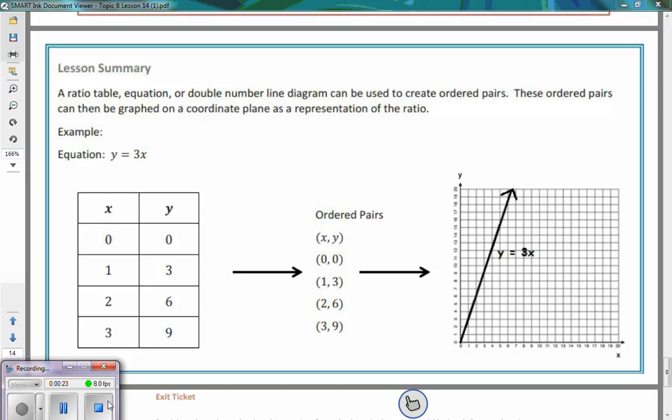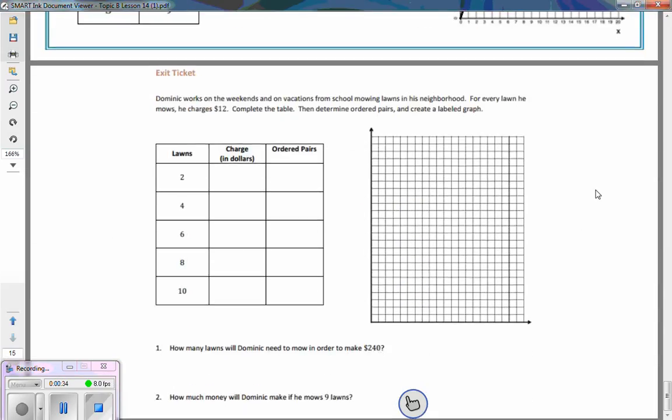We talked about the different things that the coordinate plane is made up of. The one that you see here, the only thing missing from it would be labeling what is the x-axis and what is the y-axis.